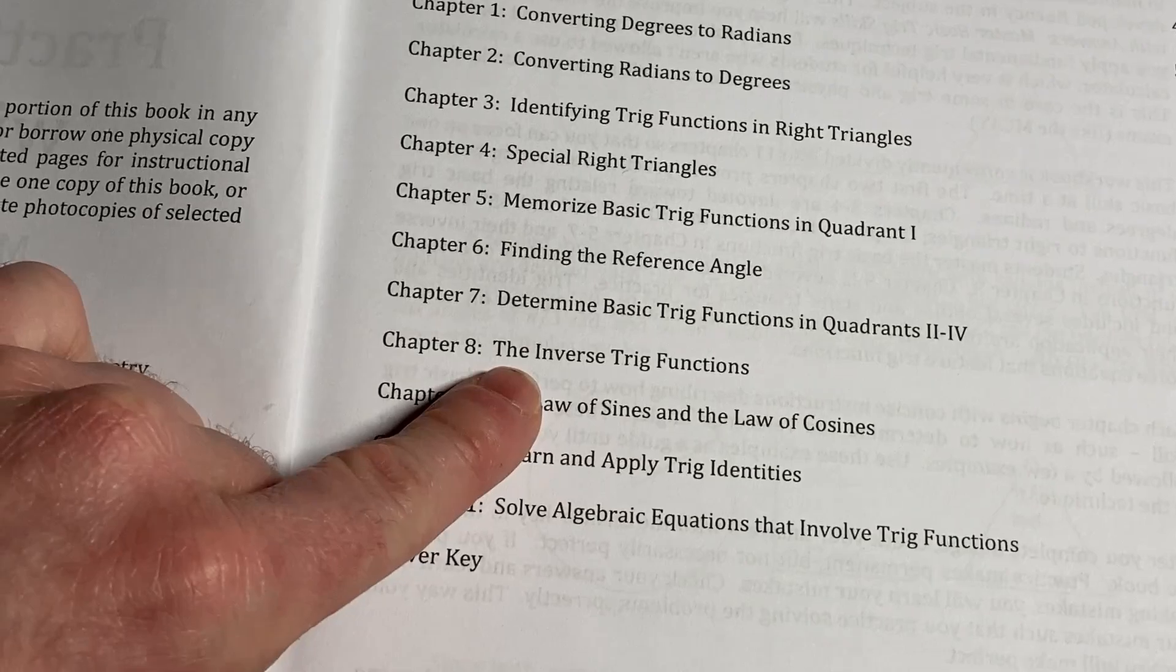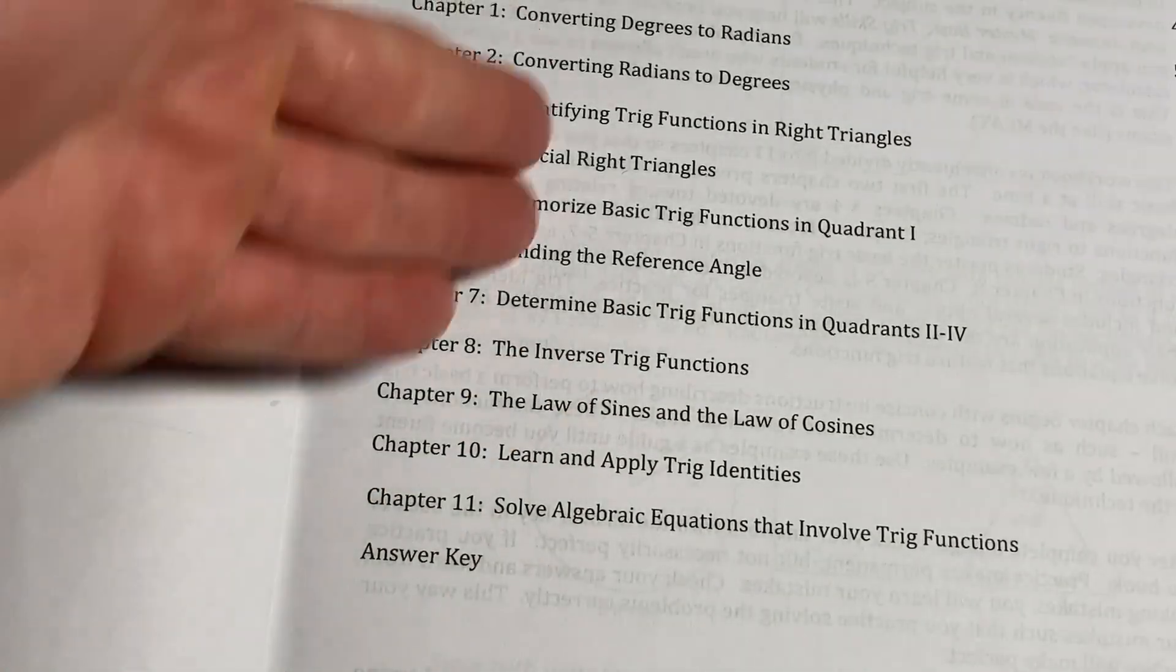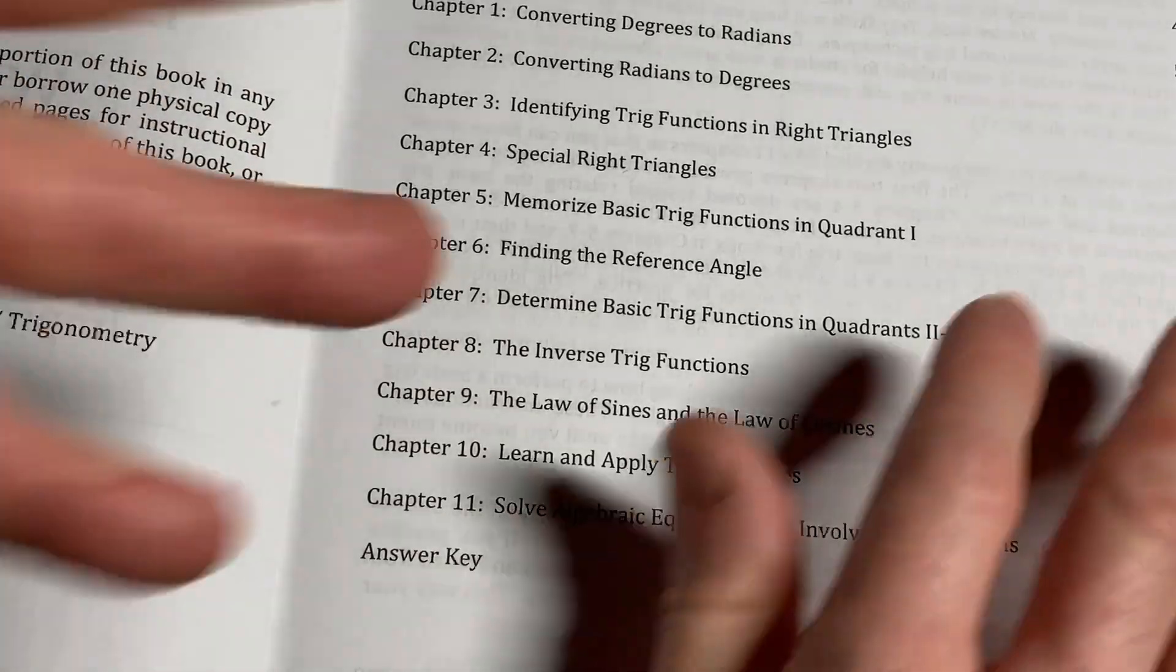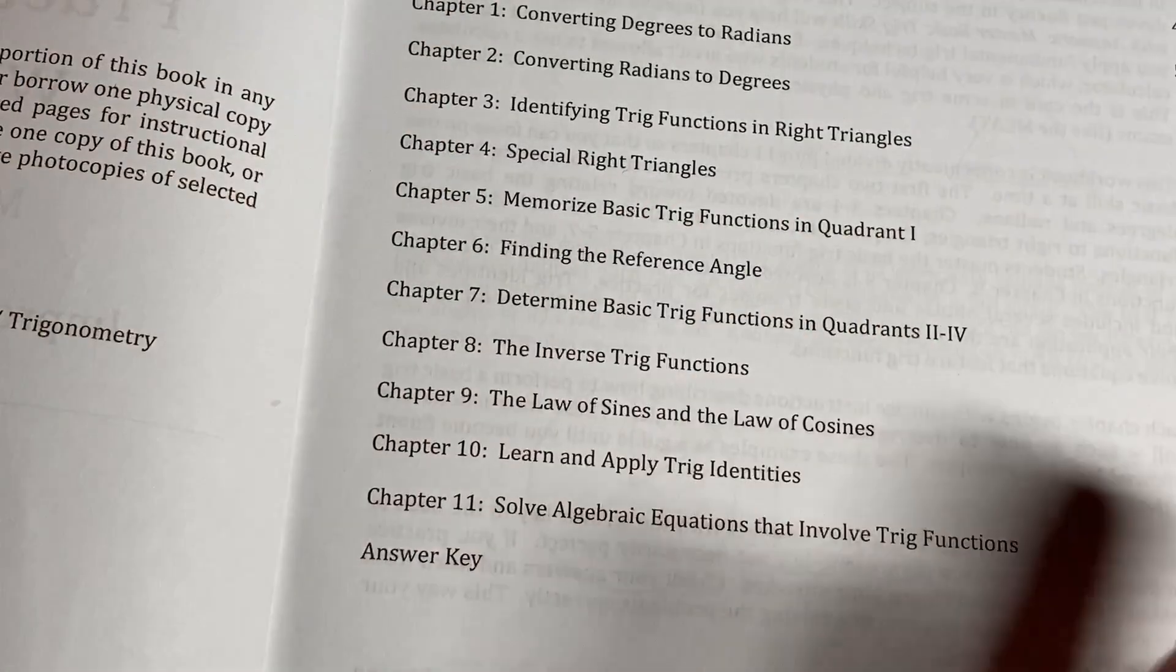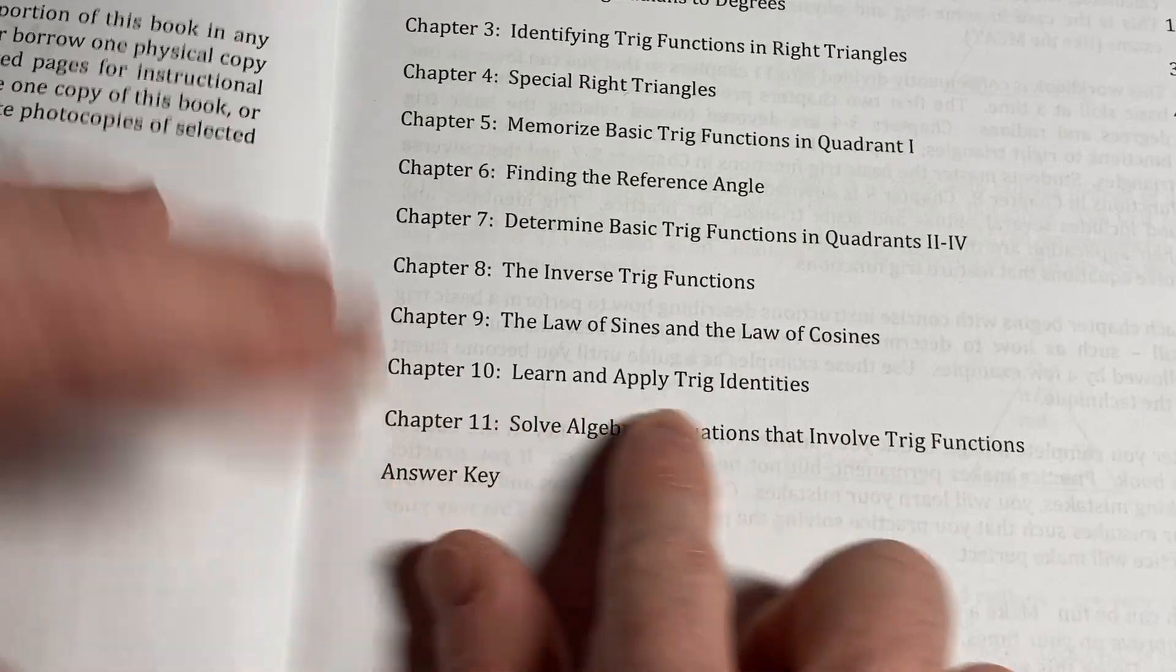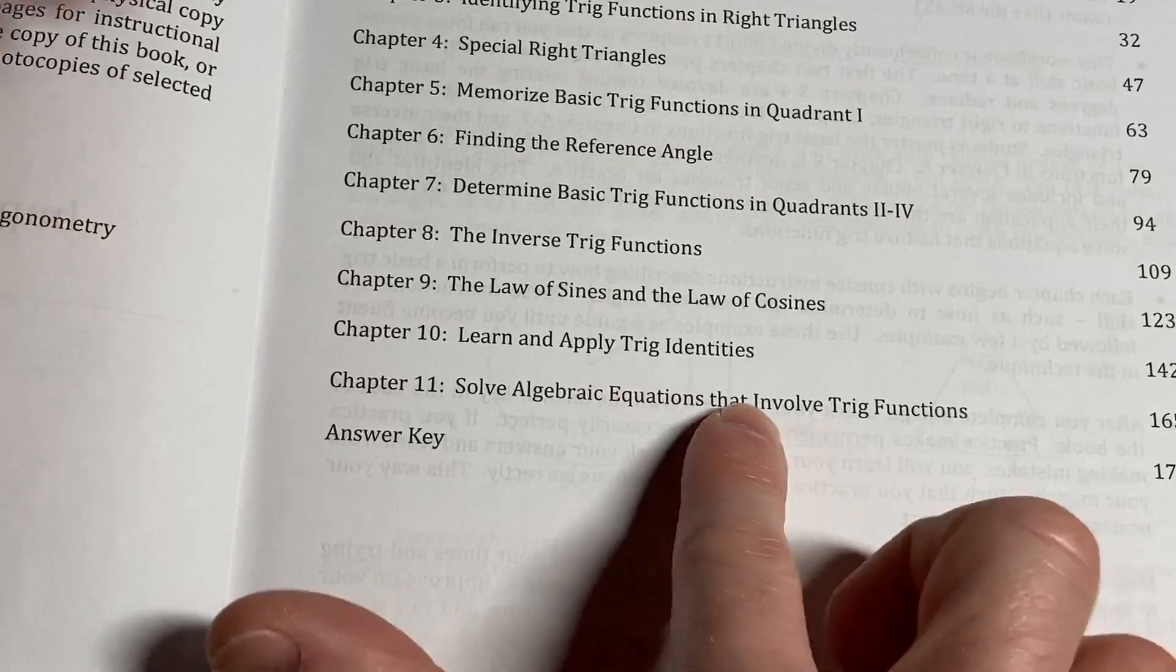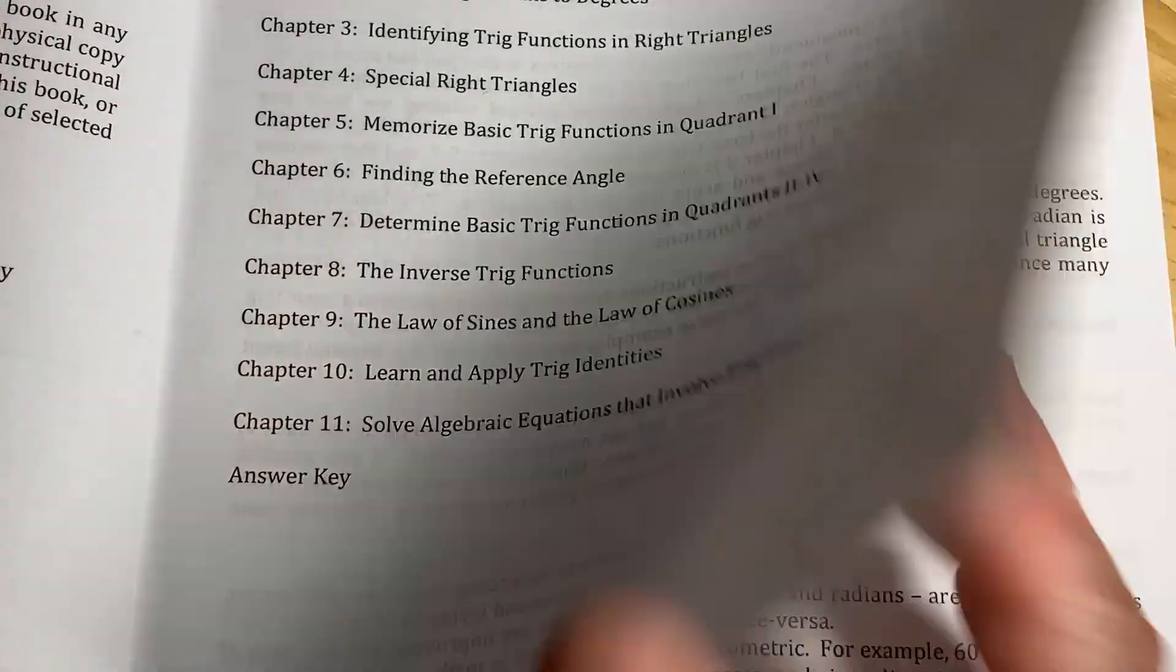Inverse trig functions, again, another place of mass confusion for students. Super, super good that he includes this. Again, these core topics that are in this book are why I think this is probably one of his best books. The law of sines and law of cosines, trig identities, and then some algebraic equations that involve trig functions. Also considered very hard for people who have a hard time with this.